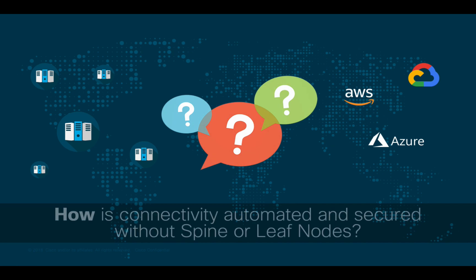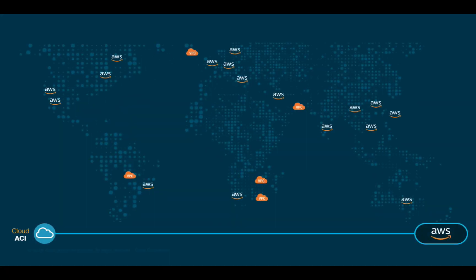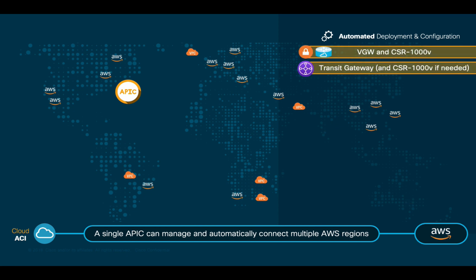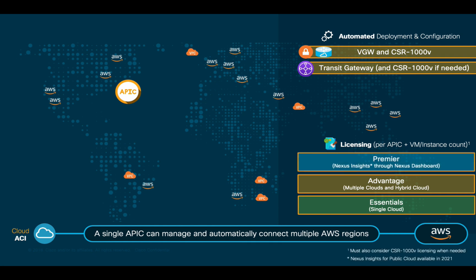You may be wondering how ACI automates and secures cloud connectivity if we don't have any spine or leaf nodes. Each cloud provider has multiple regions and availability zones globally. In the case of AWS, ACI automates and secures cloud connectivity across VPCs and regions through a single Cloud APIC, which automatically deploys and configures VGWs and CSRs if you choose to use a hub-and-spoke model, or transit gateways if you prefer. In terms of licensing, you just need to choose the right option for each Cloud APIC you deploy based on your needs. For a single Cloud APIC deployment, you would only need the Essentials license. For multiple clouds or APICs, you would need the Advantage license. And you would use Premiere if you want to include Nexus Insights as part of the Nexus Dashboard for your cloud environment.